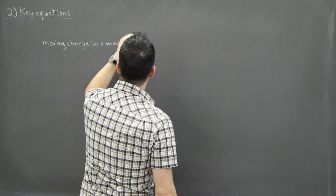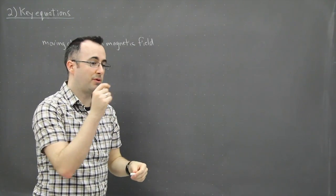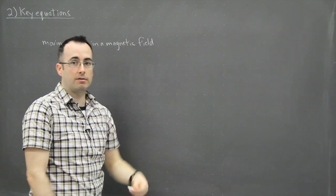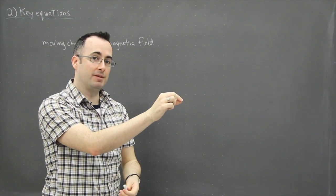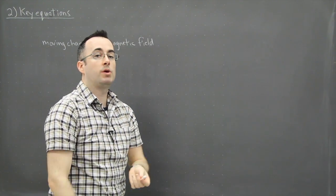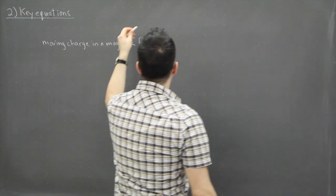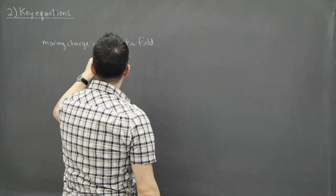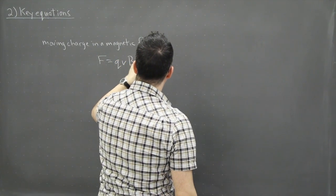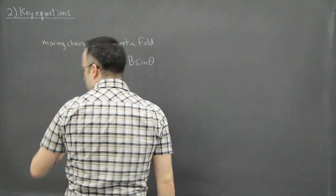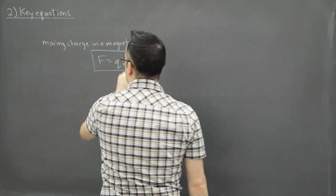So here what we do is we have a charge—this could be an electron, it could be a proton, it could be an alpha particle, whatever. It's just zooming along and all of a sudden it runs into a magnetic field. The question is what happens to it? Well, it's going to feel a force and it's going to depend on a few things. So the equation goes like this: F equals Q V B sine theta. This is the equation as it appears in your data booklet.